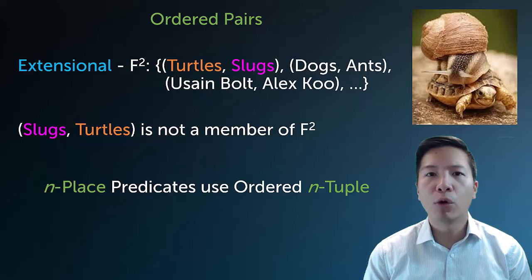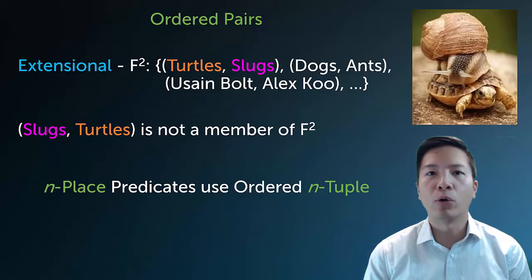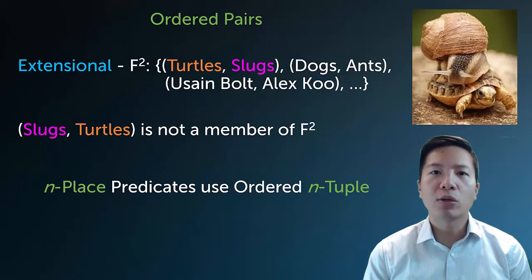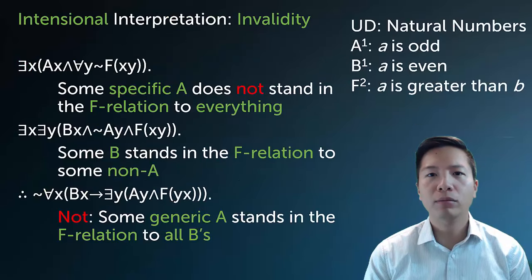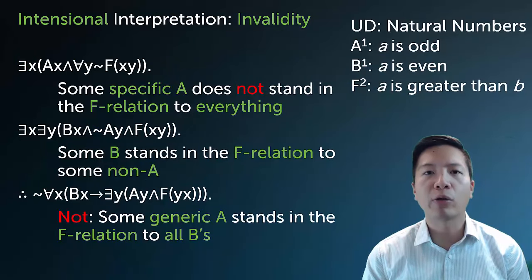Now this technique works as you move to higher order predicates. If you end up getting F3, F4, F5, and so on, that's okay. You just move to an ordered triple or an ordered four-tuple or an ordered five-tuple and so on. This system does work, but it's quite unwieldy. So why would we ever want to use it if it's quite difficult to express even a two-place binary predicate extensionally?